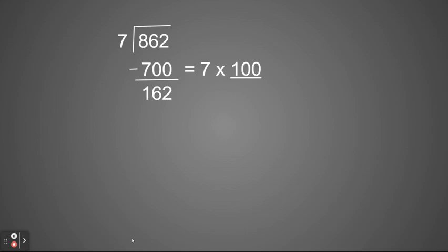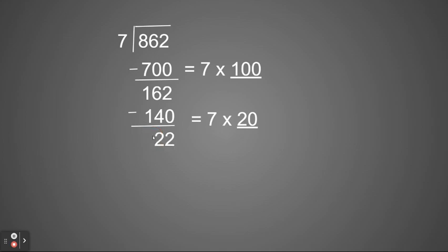I have to think, how many times can 7 go into 162? The easiest way to do this is by looking at multiples of 10. I know 7 times 10 is 70, but 7 times 20 is 140, and 140 is very close to 162. So I'm going to start with 7 times 20. 7 times 20 is 140. Now we have 140 accounted for by that 7 times 20, so I'm going to subtract that portion. When I do so, I have 22 left.